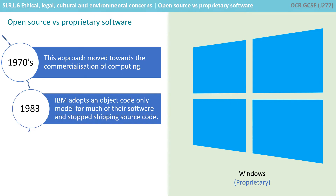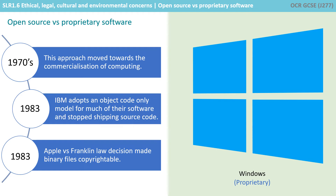Starting in February 1983, IBM adopted an object-code-only model for a growing list of their software and stopped shipping source code. Also in 1983, binary files became copyrightable in the United States as a result of the Apple versus Franklin law decision.